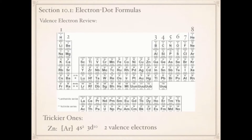So those are the trickier ones — it's still not that tricky. It's just that you can't count using the periodic table. So zinc has two valence electrons.